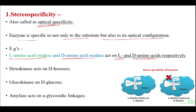So in stereospecificity, the particular enzyme acts not only on the substrate but also adheres to its optical configuration. Hexokinase acts on D-hexoses, glucokinase acts on D-glucose, and amylase acts on the alpha glycosidic linkages.